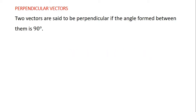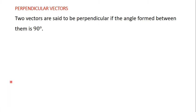Two vectors are said to be perpendicular if the angle formed between them is 90 degrees. So if you have two vectors such that when you draw them on a diagram, the angle formed between them is 90 degrees, we say that those two vectors are perpendicular.